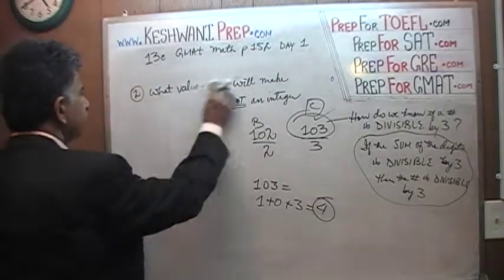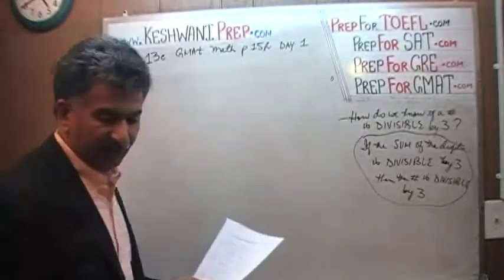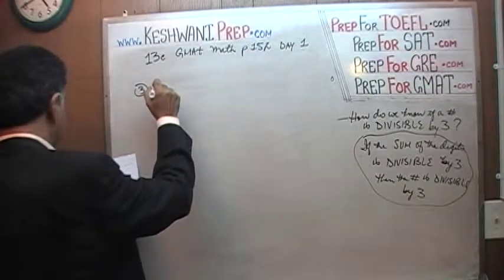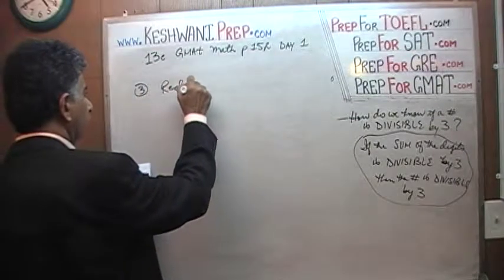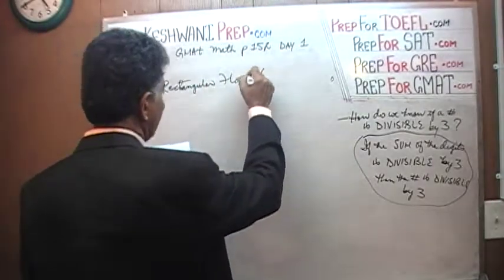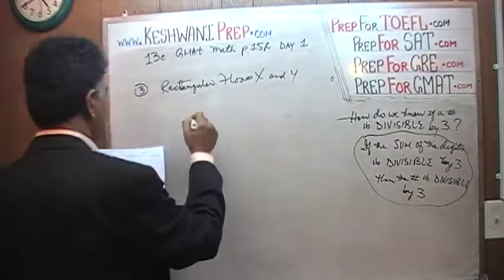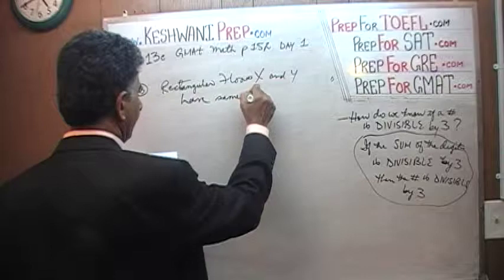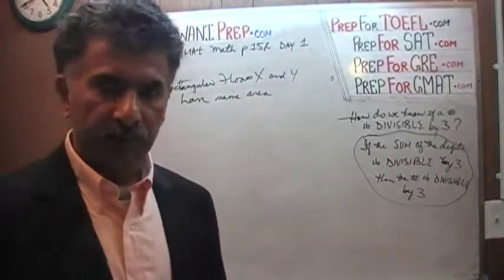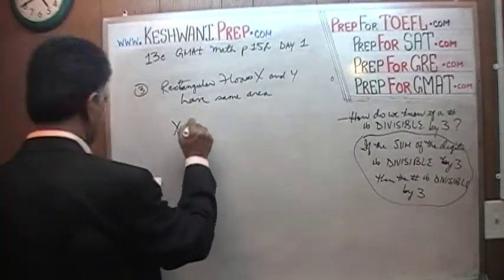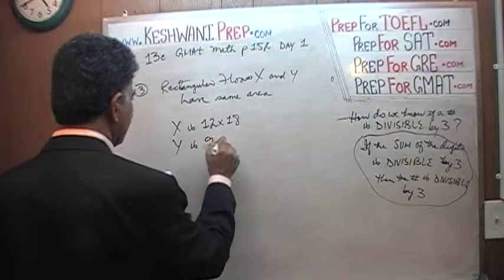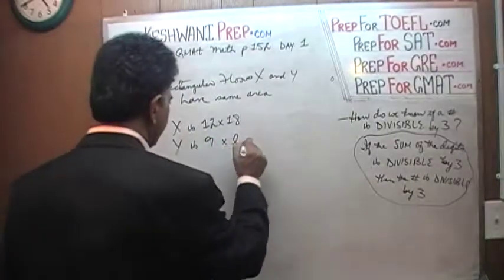The last one — number 3 — that's the last one I have planned to do today. They tell you we have two rectangular floors, calling them floor X and floor Y, and we are told they have the same area. Floor X is 12 by 18, and floor Y is 9 by an unknown length — which is what we have to find out.